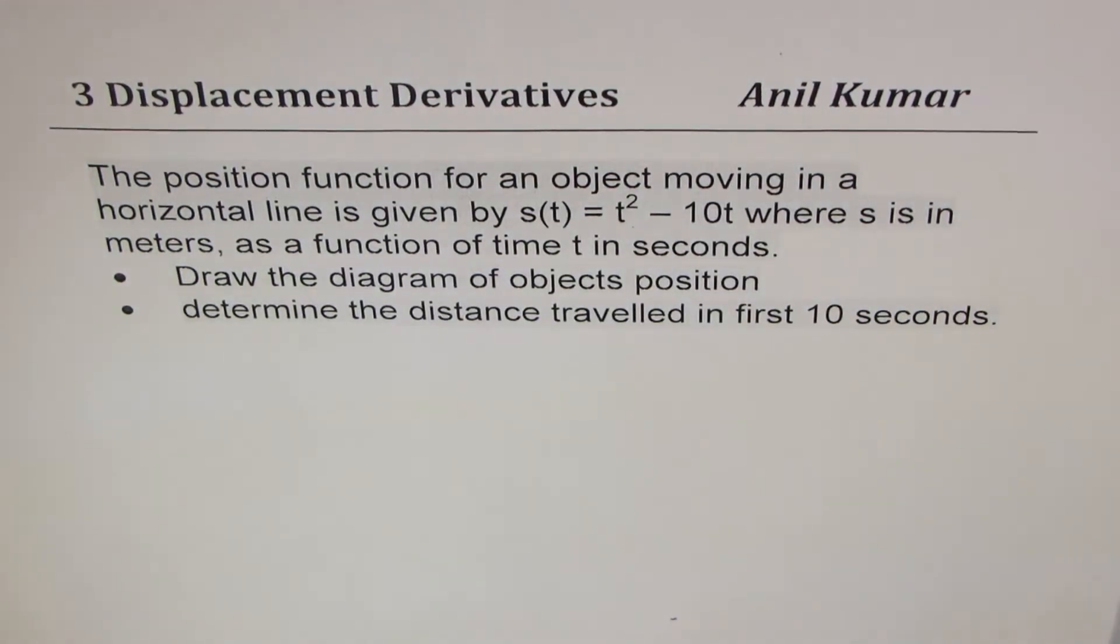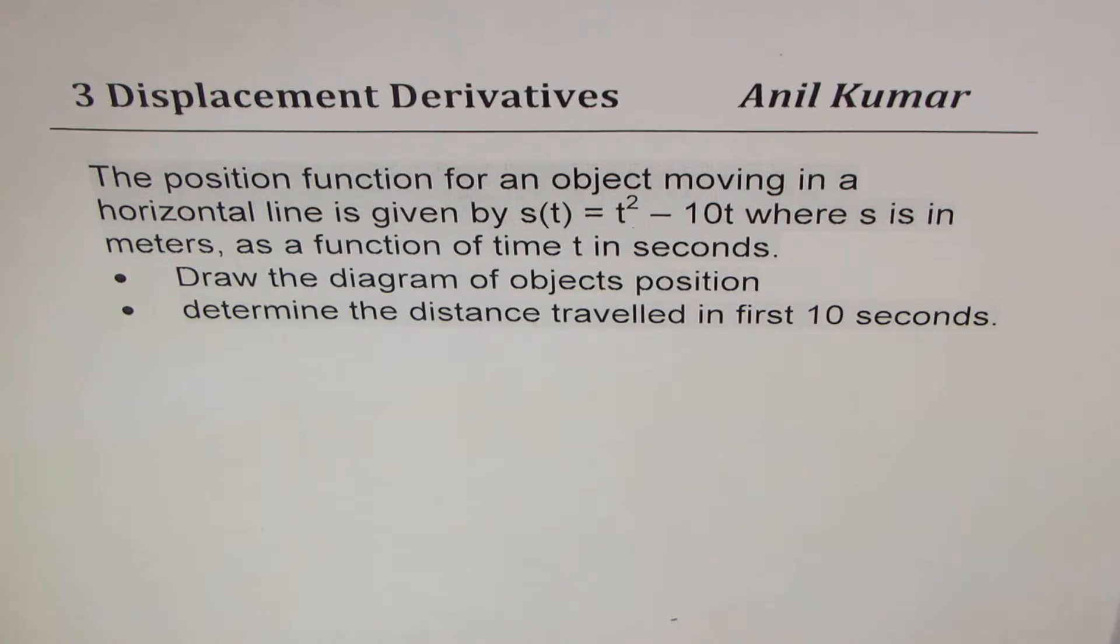I'm Anil Kumar sharing with you a video on displacement of a function. The question here is: the position function for an object moving in a horizontal line is given by s(t) equals t squared minus 10t, where s is in meters as a function of time t in seconds.